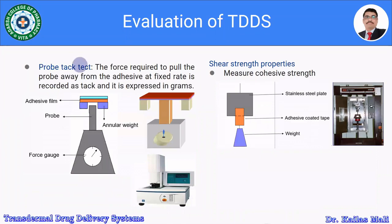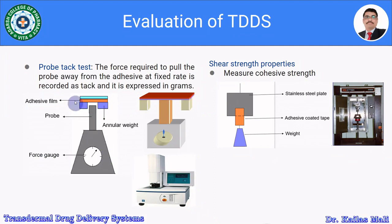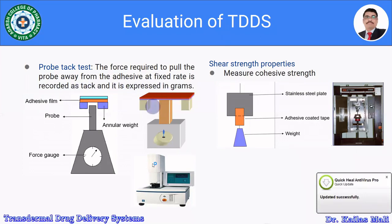In the probe tack test, the force required to pull the probe away from the adhesive at a fixed rate is recorded as tack and expressed in grams. The equipment consists of an angular weight, force gauge, probe, adhesive film, and backing layer.